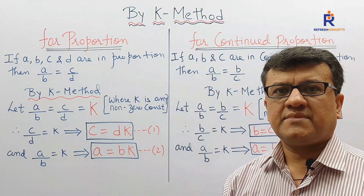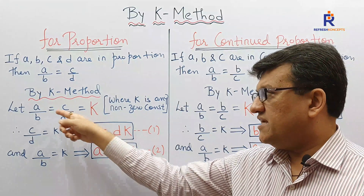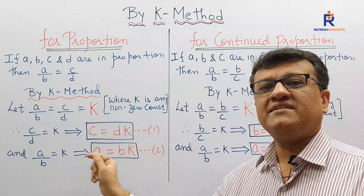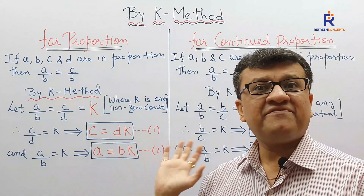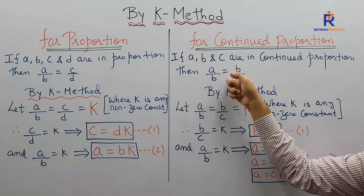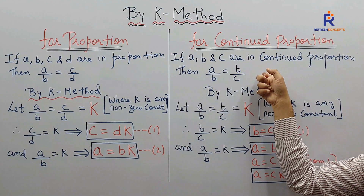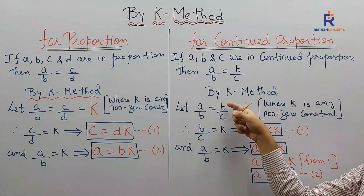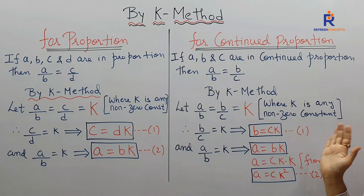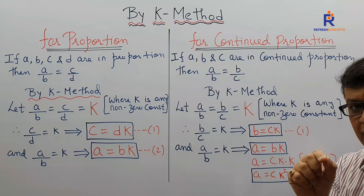What if there are three ratios: A by B equals C by D equals E by F? One more equation comes: E by F equals K, therefore E equals FK. Now for four terms in continued proportion — A by B equals B by C equals C by D, so ABCD are in continued proportion. Let A by B equal B by C equal C by D equal K. Take the extreme right: C by D equals K, which gives C equals DK — equation number one.